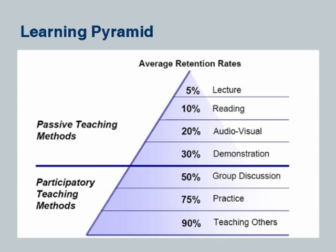From the National Training Laboratories, Bethel, Maine, the average retention ratio is given as follows. When we have passive methods — when the student is not involved — the approximate retention rate is quite low, about 30%. The moment we get participatory teaching methods and the student is involved, the retention rate increases: from 50% for group discussion to 75% for lab classes, and even higher when students teach others, such as in seminars. So the question is: can we have more participatory teaching and more interaction in the class? Can we facilitate — instead of teaching, can we make it a learning process? That is what we are trying to answer.